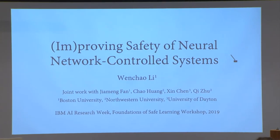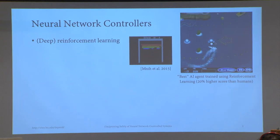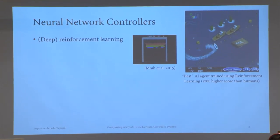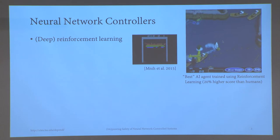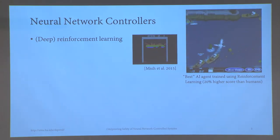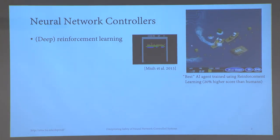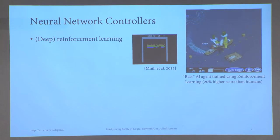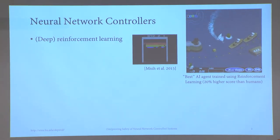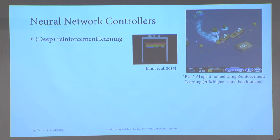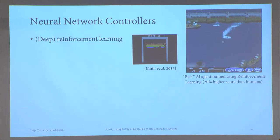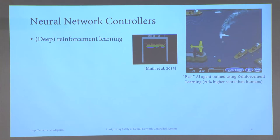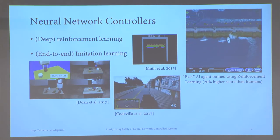Spurred by exciting developments in deep learning, there's been a growing interest in using neural networks in place of traditional or even human controllers. This Nature paper talks about training an agent to achieve human-level performance in a set of Atari games. However, this performance-driven wave sometimes leads to unintended consequences — if your safety requirement is not properly encoded in the reward function, you can end up with an agent that performs well but crashes a lot, at least in simulation.